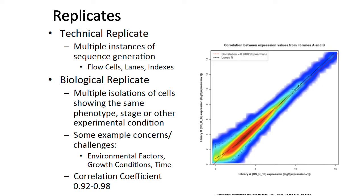When doing an RNA-seq experiment, you intuitively want to get some kind of statistical confidence about each expression measurement you make. In order to get that statistical confidence, you have to make every measurement multiple times and vary different factors — either technological or biological — to get a sense of how good your estimate is of how highly or poorly expressed each gene is.